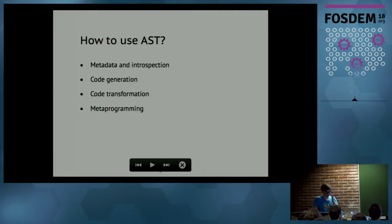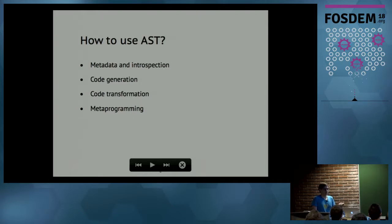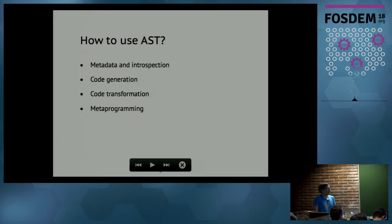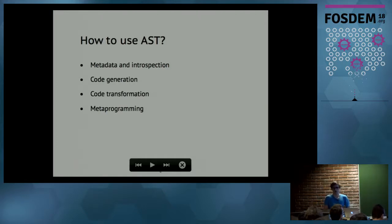This is very useful if you deal with FFI — a foreign function interface — and you want to create a library in Rust usable from other languages. It would be very tedious to write that code by hand. With ASTs, you can scan all of your library's code, extract information about the functions you export, and generate code in other languages based on that extracted information. You can also transform your code, which is practical when you want to apply refactoring.